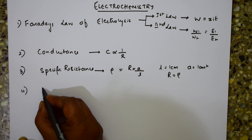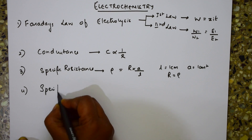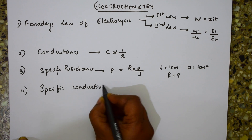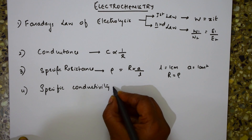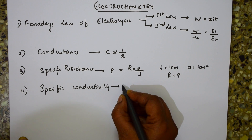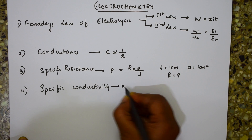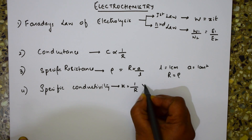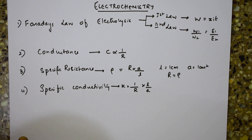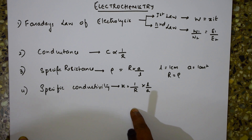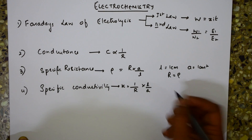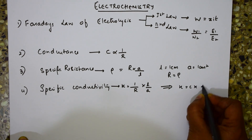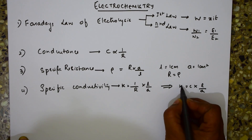The next formula to remember is specific conductivity, denoted by kappa (κ). The formula is κ = (1/R) × (L/A). Since 1/R equals conductance C, this can also be written as κ = C × (L/A).